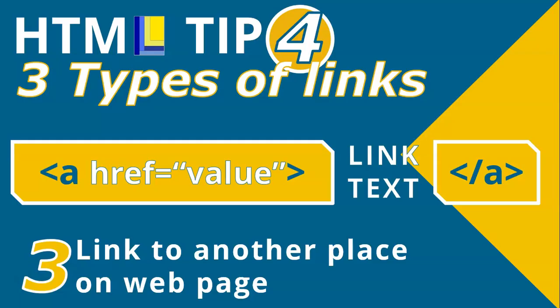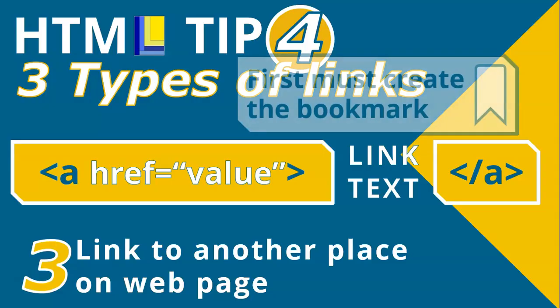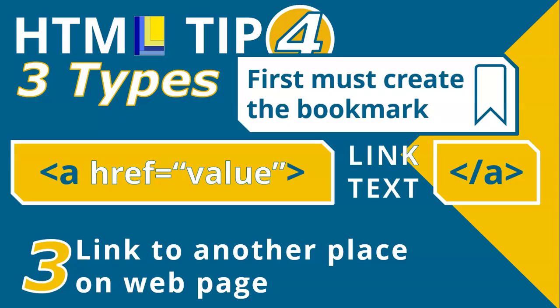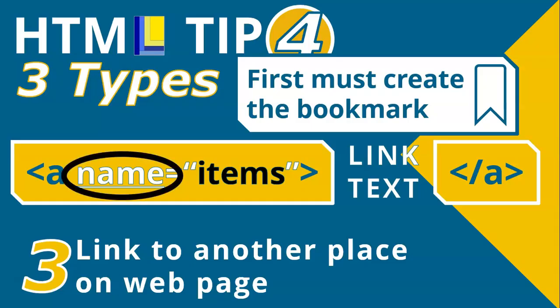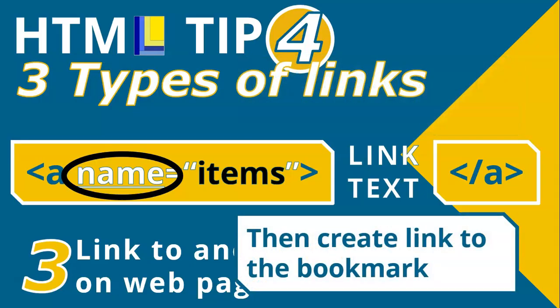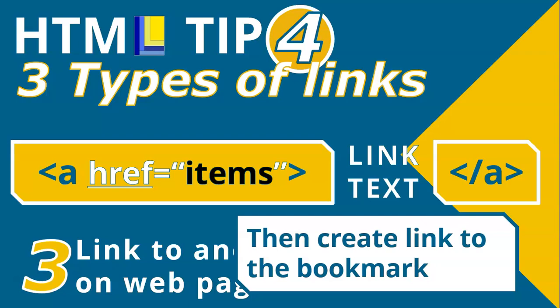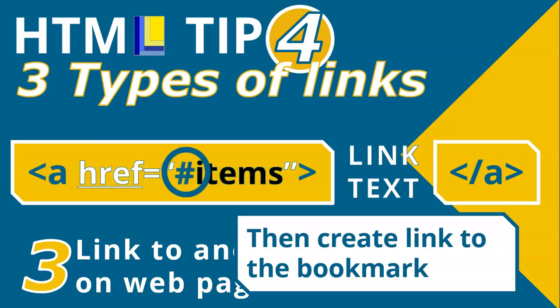The third link type is a link to another place on the same web page, and there are two steps. First, create a bookmark: use the name attribute — not href — and give it a value. You can make up the value; just remember what it is. This creates the bookmark marker. Then, create the link to that bookmark: on the clickable text or item, use the href attribute equal to the same name you used for the bookmark. The only difference is you must put a hashtag in front of the name in the href so it knows to go to that bookmark.